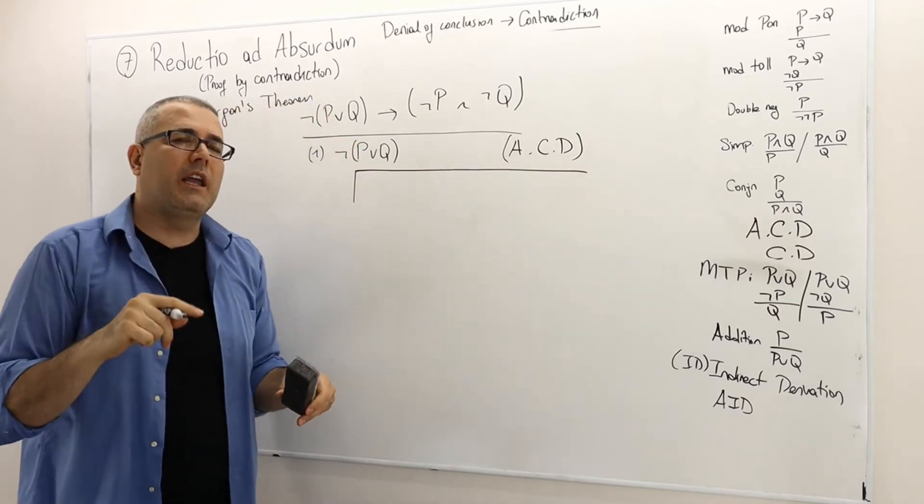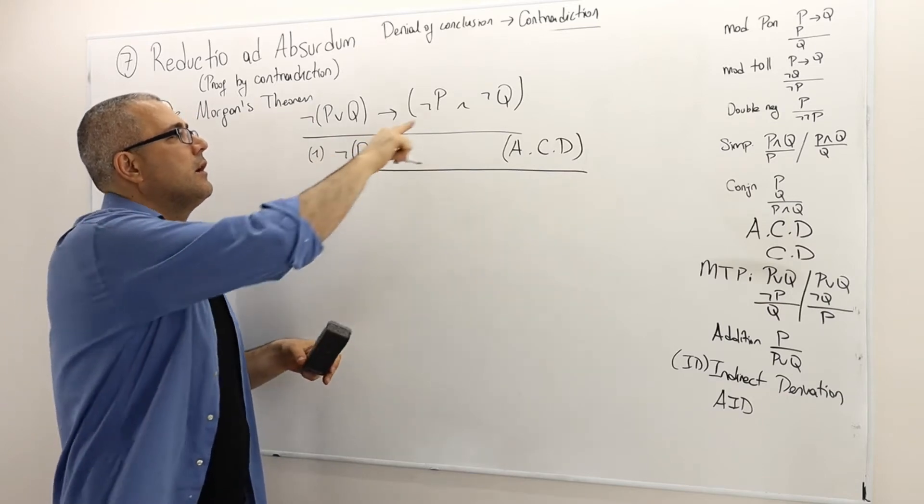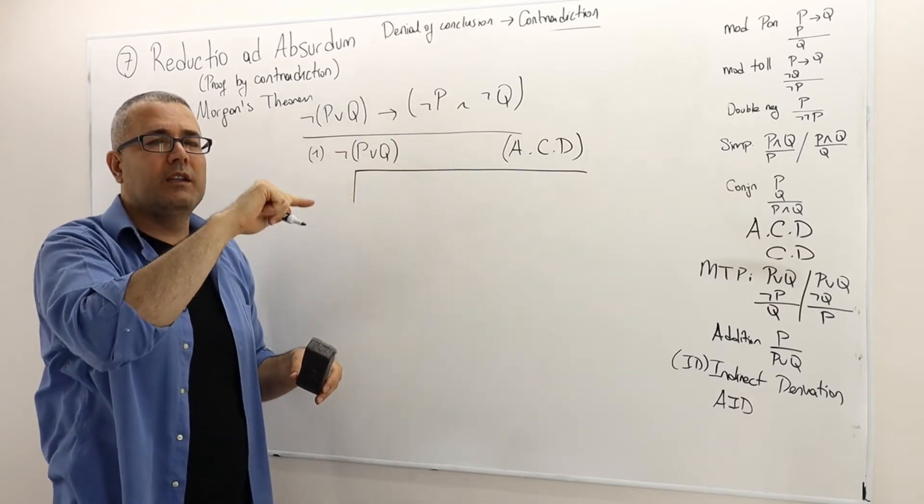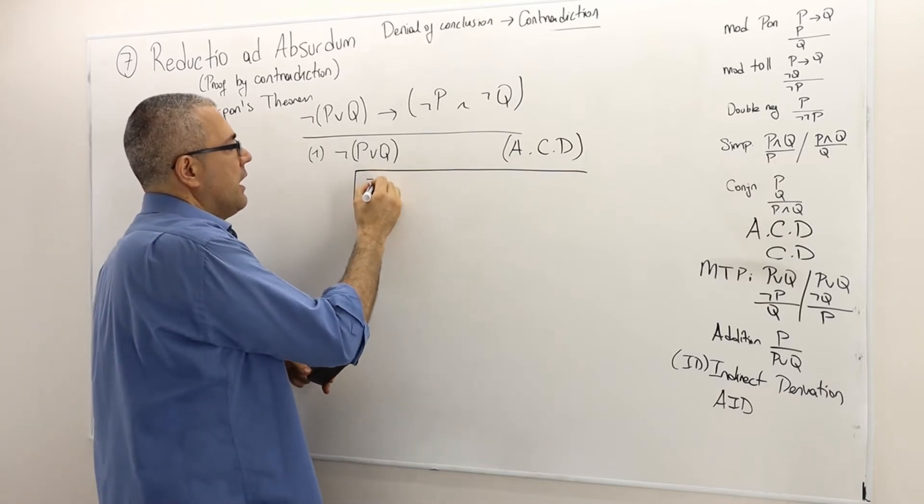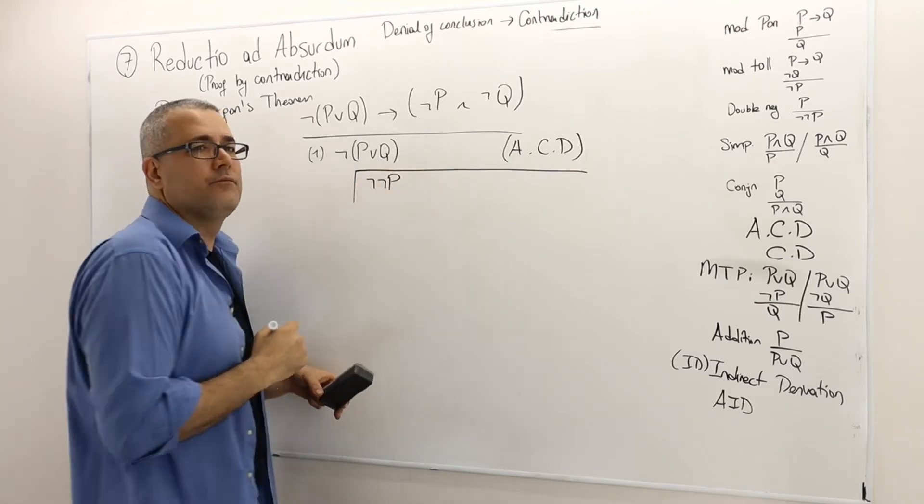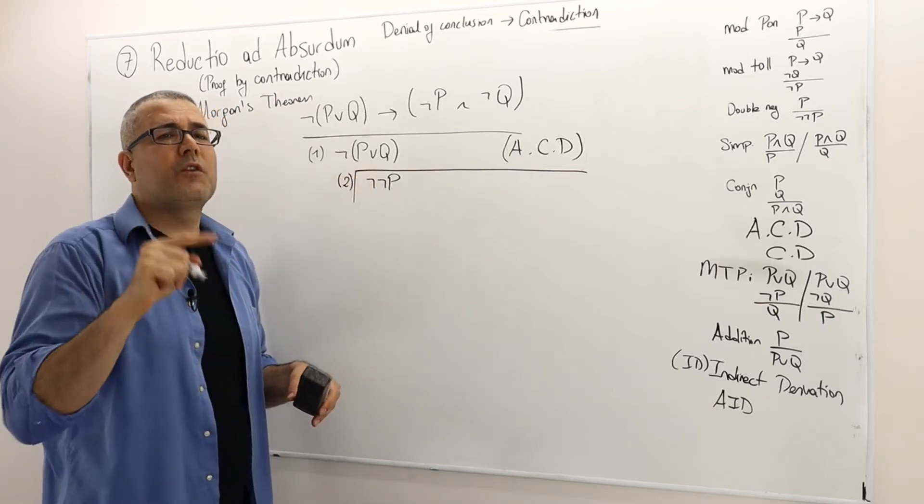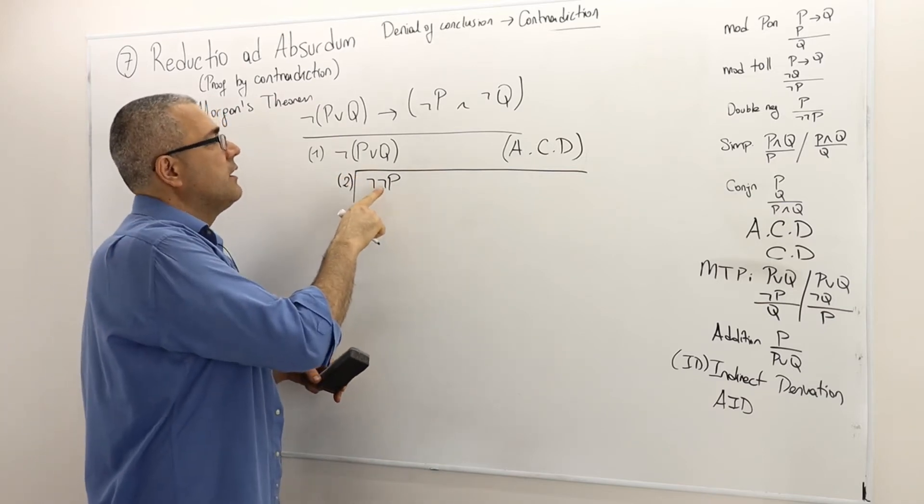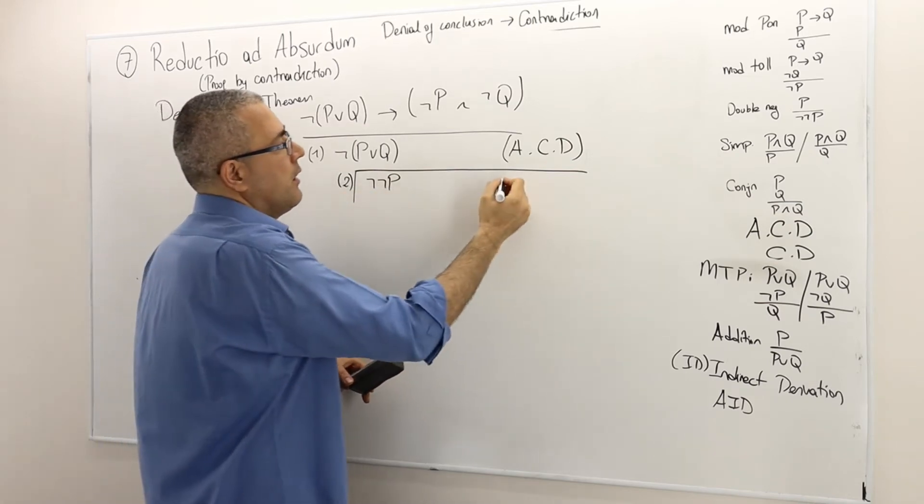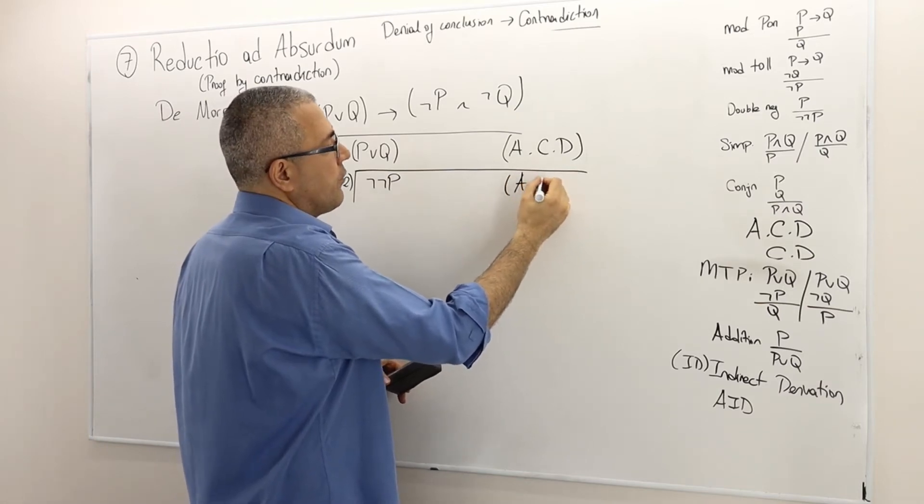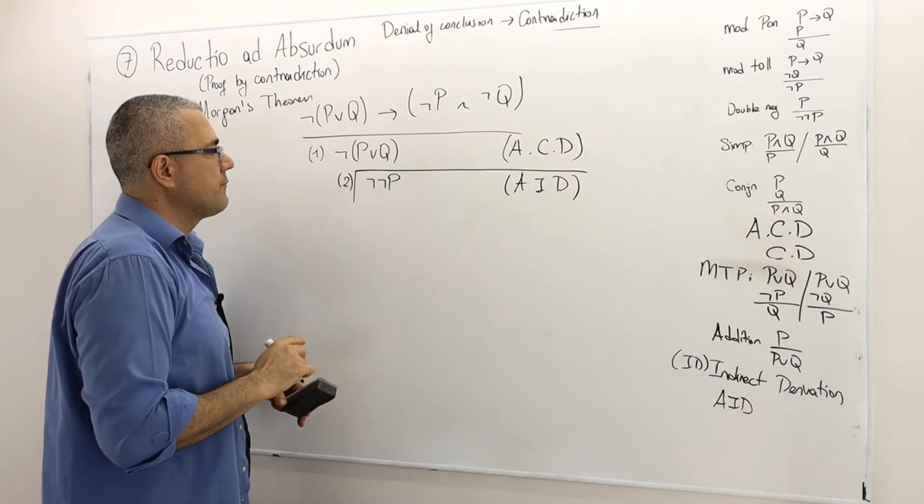What is the conclusion I am trying to achieve? I am trying to prove that not P is true. So deny this conclusion: not not P. So this is line two. So suppose for a contradiction that not P is false. So therefore, not not P is true. So this is assumption for indirect derivation, I call it AID.